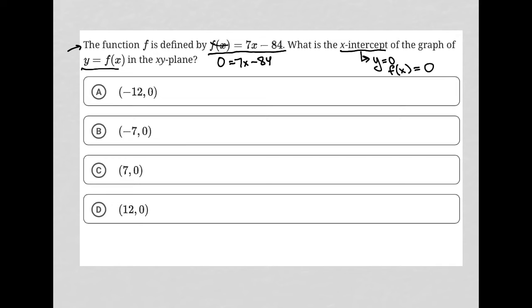Whatever I find the value of x to be will be the x-intercept value. Adding 84 to both sides, I get 84 = 7x. Divide both sides by 7,